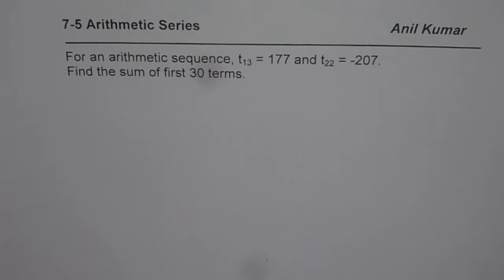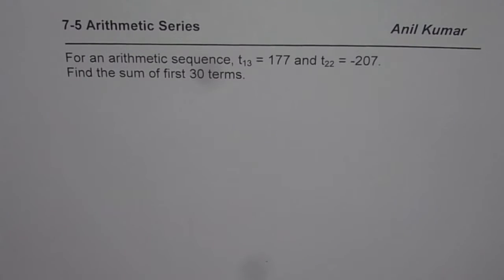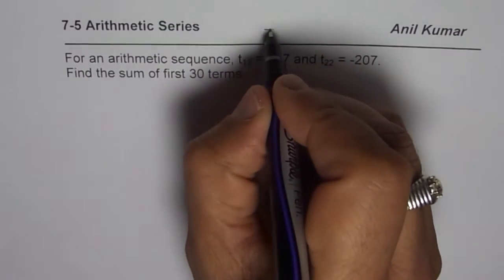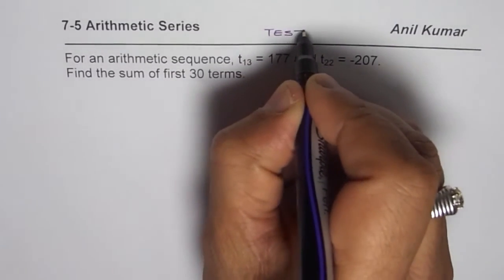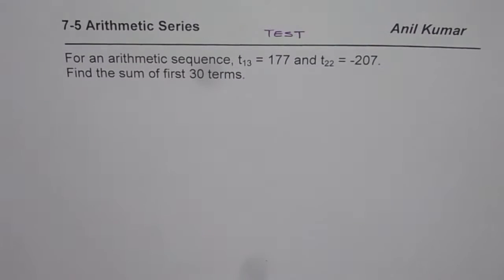I'm Anil Kumar sharing with you one of the most difficult questions on arithmetic series. This is my test question for you: for an arithmetic sequence, t₁₃ = 177 and t₂₂ = -207. Find the sum of first 30 terms.